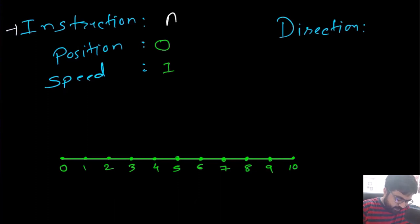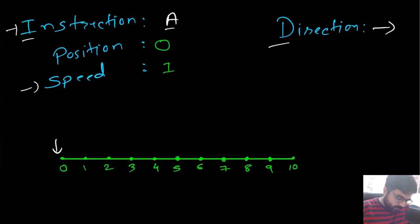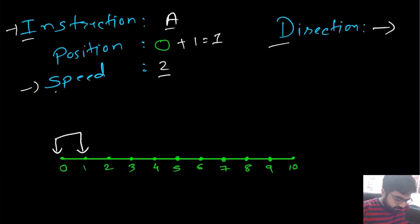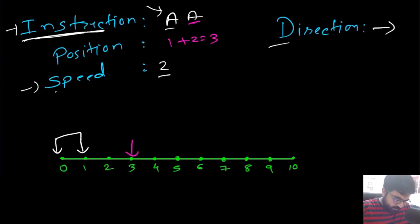If we add one more accelerate, position becomes one plus two, so three. Adding another accelerate gives us three plus four, which is seven, with speed becoming eight. So after three accelerate instructions the car travels from zero to one, then three, then seven.